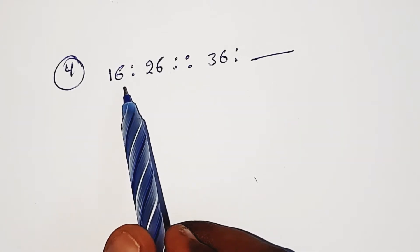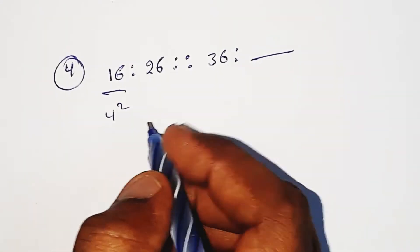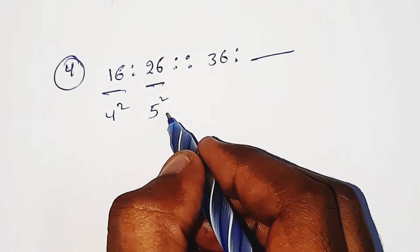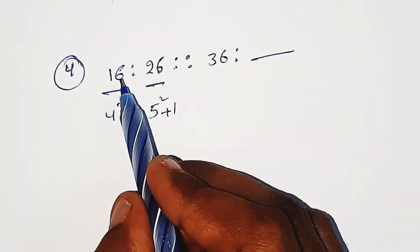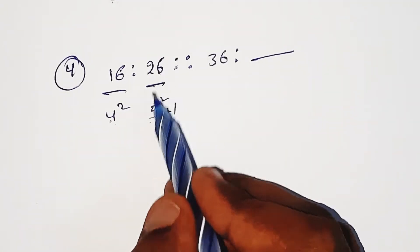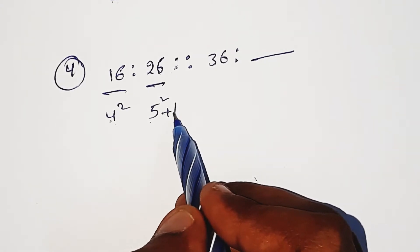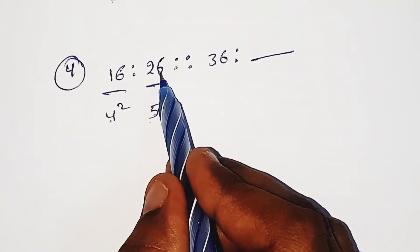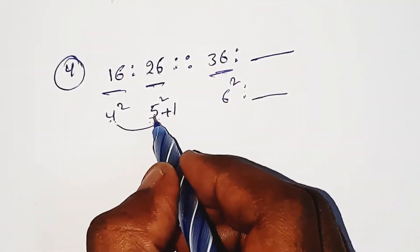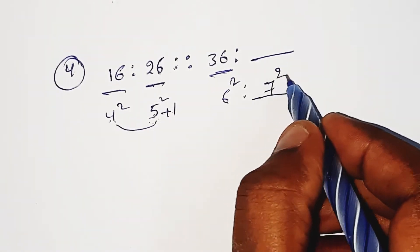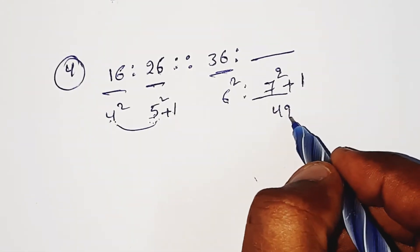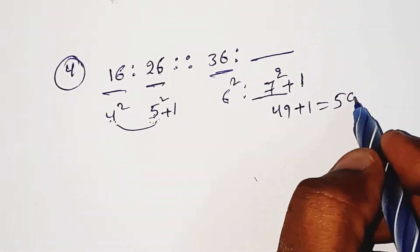Next problem: 16 colon 26, proposition 36 colon question mark. 16 is 4 squared. 26 is 5 squared plus 1, since 5 squared is 25, and 25 plus 1 is 26. 36 is 6 squared. Following the pattern: 7 squared is 49, plus 1 is 50. 50 is the answer.